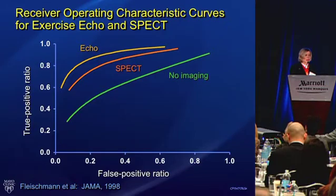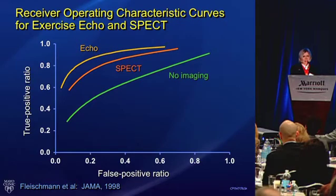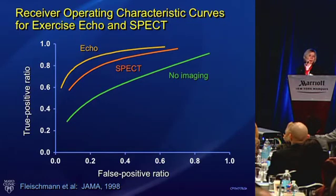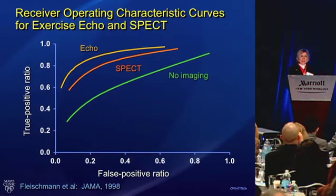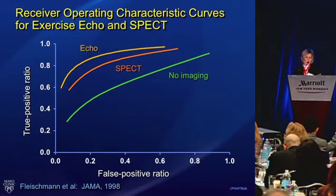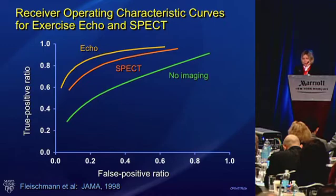This shows the receiver operating characteristic curves for exercise echo and exercise SPECT, using coronary angiography as the gold standard. The best combination of sensitivity and specificity was with exercise echo, not exercise SPECT. The investigators concluded that you could use either, but it certainly raises the question of why exercise echo isn't used more commonly. Both were superior to testing without imaging.